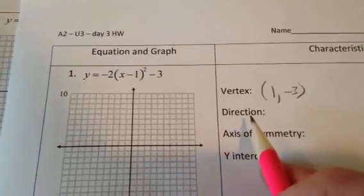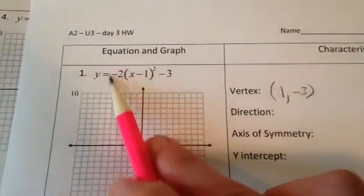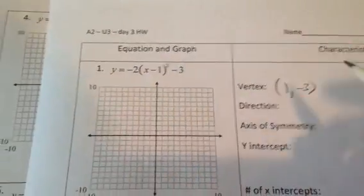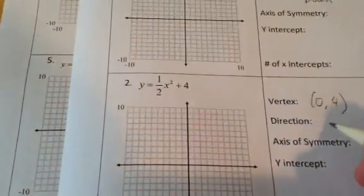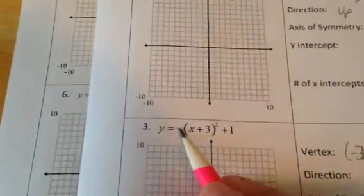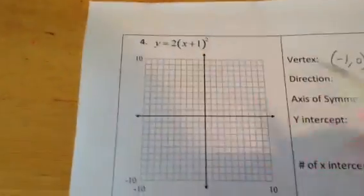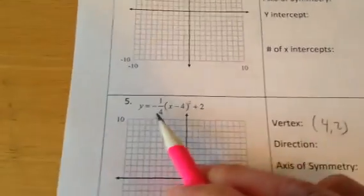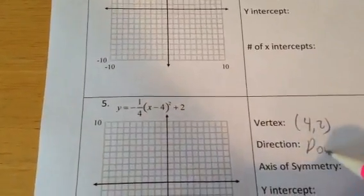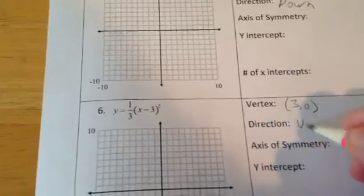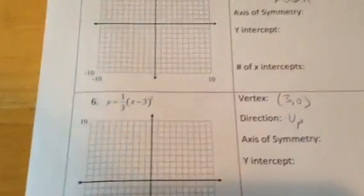The direction you can tell because of the sign of the a term. Since it's negative, it's opening down. Since it's positive, it's opening up. Since it's negative, it's opening down. Since it's positive, it's opening up. Since it's negative, it's opening down. Since it's positive, it's opening up.